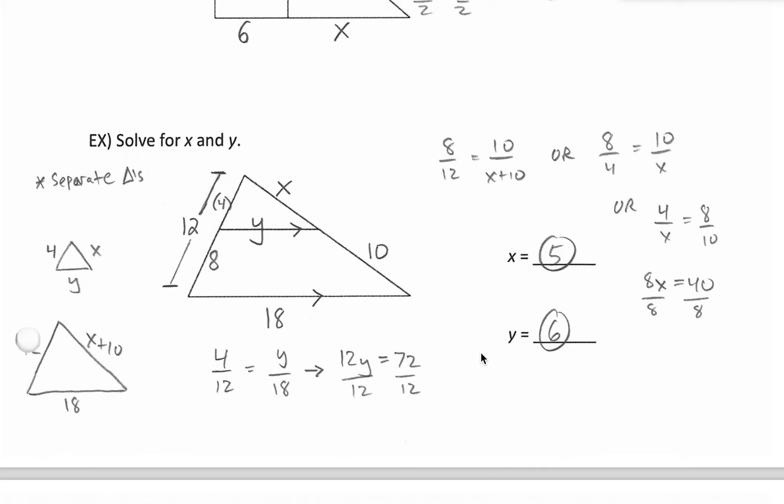To solve for y, again, you could set up 4 compared to 12, the left sides, and then compare the bottoms, y to 18. Cross multiply. 12 times y is 12y. 4 times 18 is 72. Divide by 12 and we get y is 6.